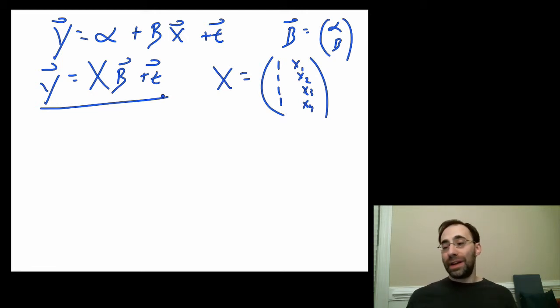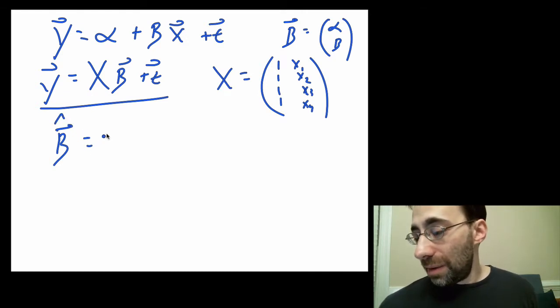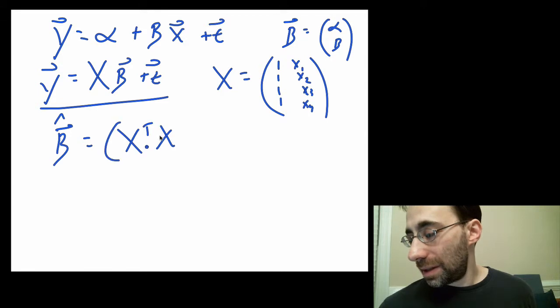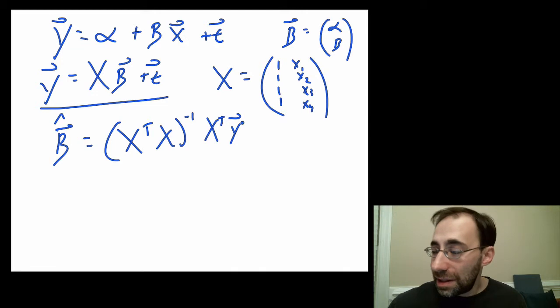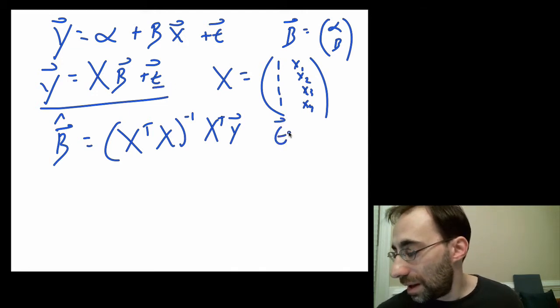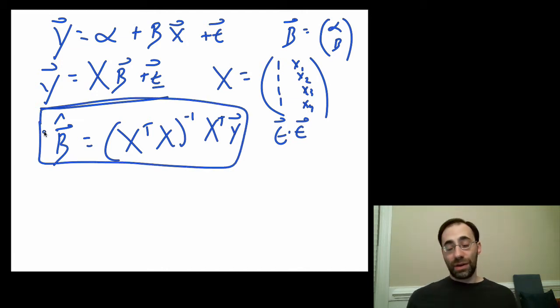We talked before when we did optimization how you can get an optimal single data point. In general, you can get an optimum beta, we'll call beta hat, which is going to equal X transpose X inverse X transpose y vector. That's going to be the optimum beta hat that minimizes the squared error here. The example we're going to do here is we're going to make up some X with one independent variable plus the constant, and we're going to multiply out with a very small number of data points and see how to get beta from that.